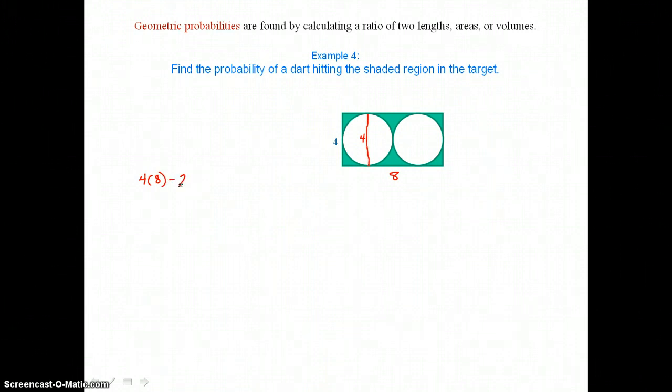So the total area of this target is length times width, 4 times 8, and now we need to subtract the areas of the two circles because they're not the shaded region. And once we subtract the two areas of the circles, we'll be left with the shaded region as our successes. The area of one circle is pi times radius squared, and if the diameter is 4, the radius is 2. So we've got pi times 2 squared for the area of one circle and I'm multiplying by 2 to get the areas of both circles. Now our successes would be hitting the target itself which has an area of length times width or 4 times 8.